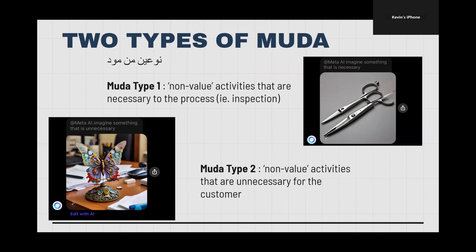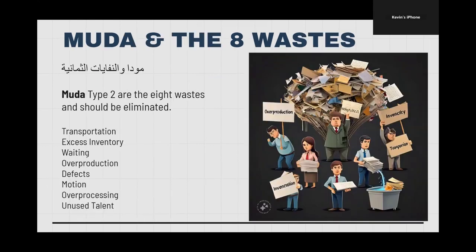There are two types of Muda, and they're both non-value. Muda type 1 is necessary to the process — something like inspecting a product, something you have to do. Muda type 2 are non-value activities that are unnecessary for the customer. Muda type 2 are the eight wastes we want to try to eliminate: transportation, excess inventory, waiting, overproduction, defects, motion, overprocessing, and unused talent.